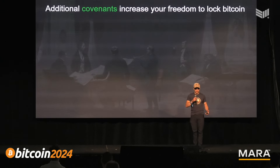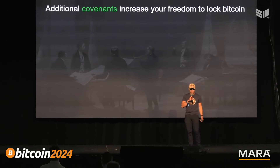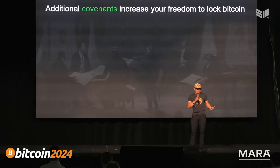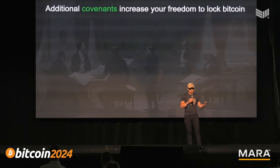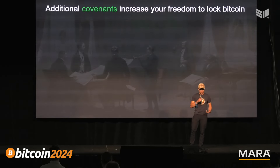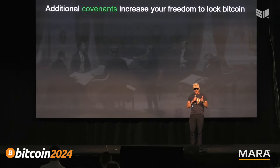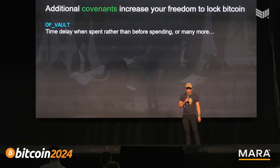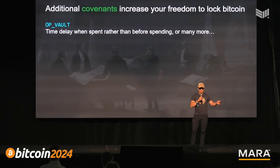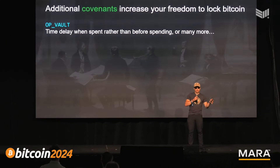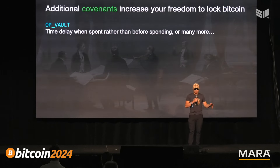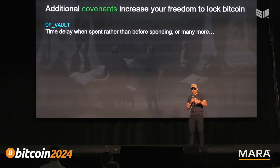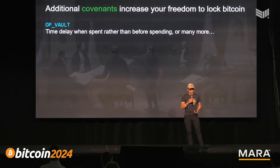Now we get into some of the other direct freedoms. For those of us who are lucky enough to be this early in Bitcoin, we probably have some on-chain Bitcoin, and we should have more freedom in how we use it — it's not only about lightning. If we were to have a covenant like a vault, instead of having only the timelocks we have today that apply from the time a UTXO was created, with a vault you can apply a time delay when the Bitcoin starts to be spent.